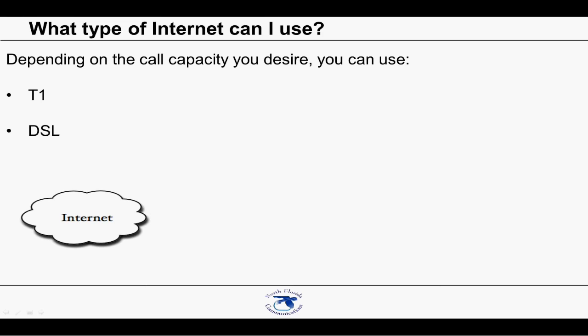Another option is DSL, generally provided by the local telephone company. DSL speeds vary depending on how far you're located from the phone company's equipment and how much you want to pay. DSL download speeds can be 3, 5, 10, or even 20 megabits per second. Unlike a T1, DSL is asynchronous, which means the upload speed is not the same as the download speed. You may have a 10 meg download speed, but your upload speed will typically be less than 1 meg.